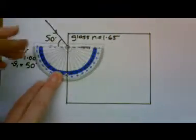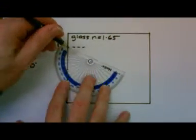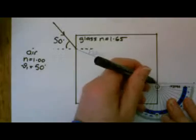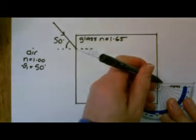Use a protractor to draw the refracted ray at 28 degrees to the normal. Continue the ray through the glass until it hits the boundary. Draw a normal line where the ray hits the glass-air boundary.